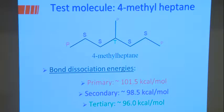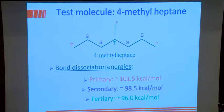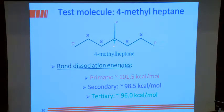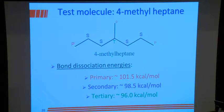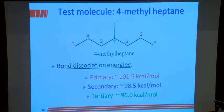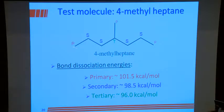As a test molecule we use 4-methylheptane. This carbon atom bonded to only one other carbon has three hydrogens — it's a primary carbon atom. This carbon bonded to two others is a secondary carbon atom. And this carbon bonded to three others is a tertiary carbon atom. The CH bond association energy for a primary CH bond is about 101.5 kcal/mol, a secondary CH bond is about 98.5 kcal/mol, and the tertiary is about 96 kcal/mol. That's important when talking about hydrogen atom abstraction.